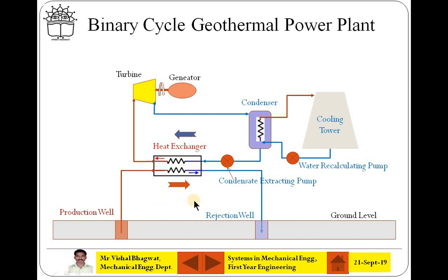This is a schematic representation of binary cycle geothermal power plant. This is the ground level. From the earth's surface, almost from 300 meters to several kilometers, there will be some heat source. Basically, it will be a steam or the brine salty liquid which will be having some temperature, and that heat can be utilized for our application.